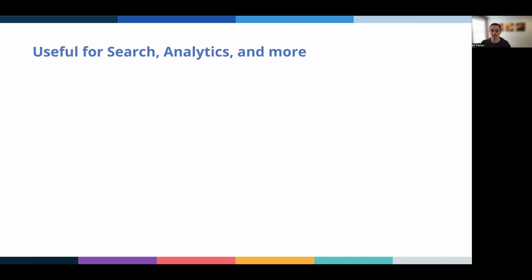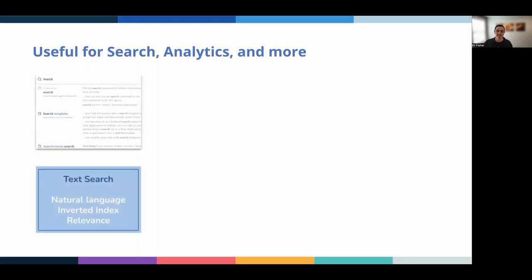There are a variety of use cases OpenSearch is popular for. First, text search. It is a search engine after all. There are natural language processing features, it's built on top of the popular Lucene search library, and there are a range of ways to optimize relevancy and ranking.